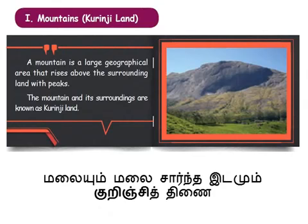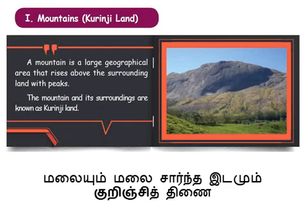We studied about the Kuringi land, or the mountains. A Kuringi land or a mountain is a large geographical area that rises above the surrounding land with peaks. The mountain and its surroundings are known as Kuringi land. The god of Kuringi land is Lord Murugan, and the occupation of the people was hunting, gathering roots and honey.